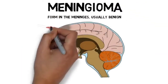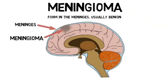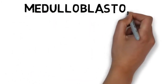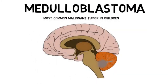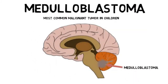Meningiomas are the most common primary brain tumor. Meningiomas form in the meninges and are usually benign. Medulloblastoma is the most common type of malignant tumor in children, and typically begins near the fourth ventricle between the brain stem and the cerebellum.